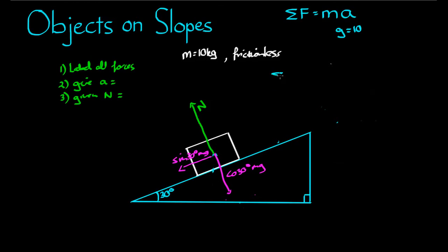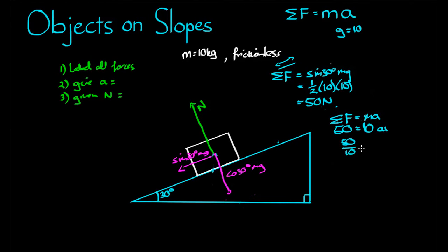So the net force in that direction there up and down the plane is equal to sin 30 degrees mg, which is equal to a half, m was 10, g was 10, so 50 newtons. The reason we don't include this force or this force in this net force calculation is because they're acting at right angles to that direction, therefore we don't have to include them. We also know that the sum of the forces is equal to mass times acceleration. So 50 newtons is equal to 10 kilograms times a, or 50 over 10 is equal to a.